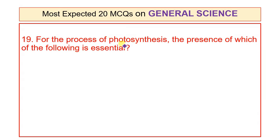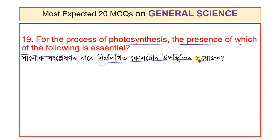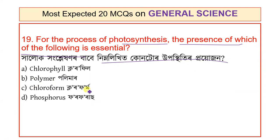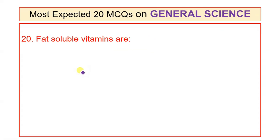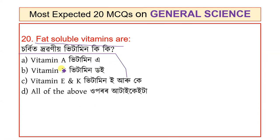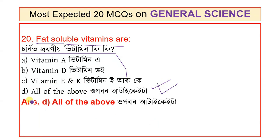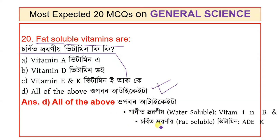Question 18: For the process of photosynthesis, the presence of which of the following is essential? Options: Chlorophyll, Polymer, Chloroform, Phosphorus. The answer is Chlorophyll. Chlorophyll is essential for photosynthesis to occur.